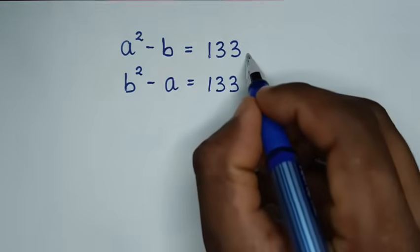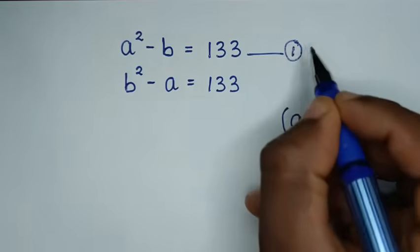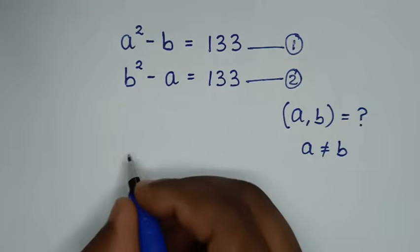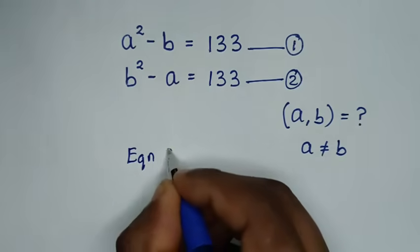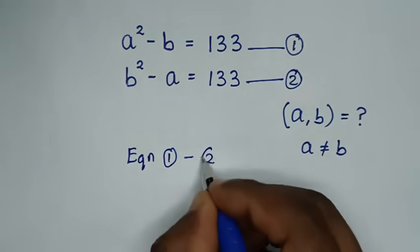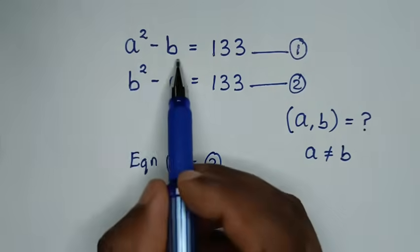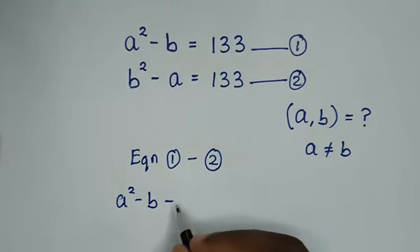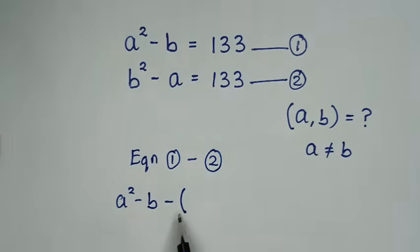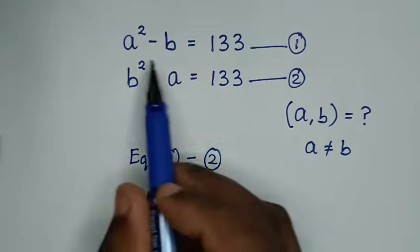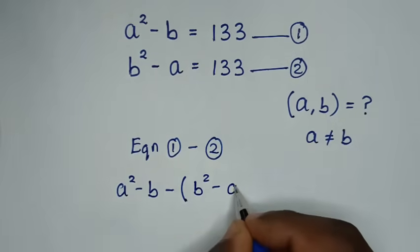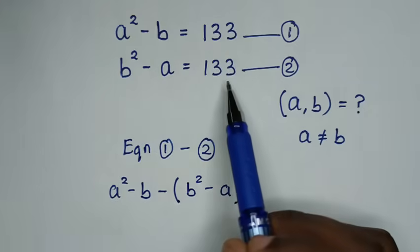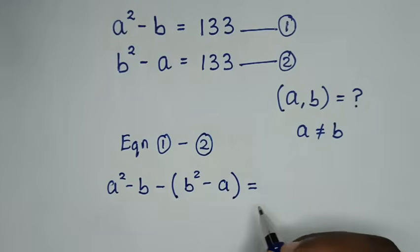Let's call the first equation Equation 1 and the second Equation 2. In the first step, we take Equation 1 minus Equation 2. The left side gives a squared minus b, minus the quantity b squared minus a, and the right side gives 133 minus 133, which is 0.